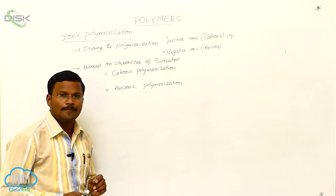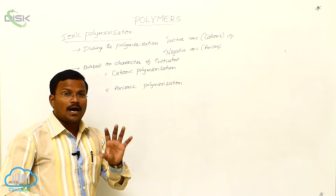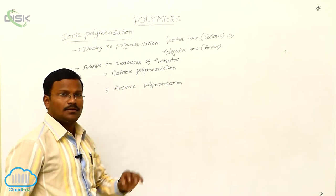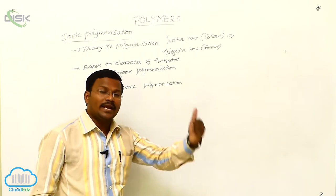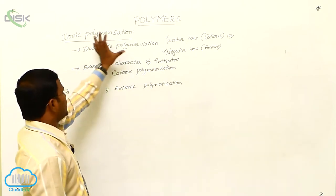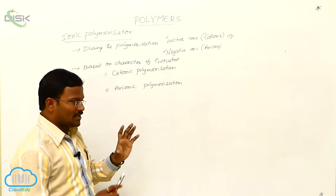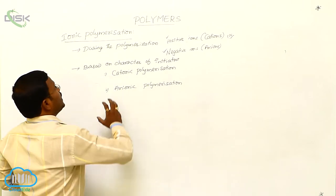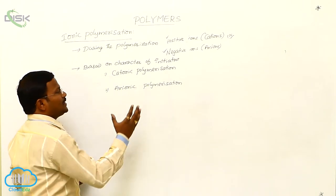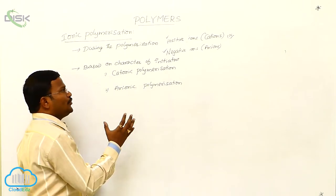Based on this phenomenon, addition polymerization is classified into two types: ionic polymerization and free radical polymerization. Ionic polymerization involves ionic intermediates produced during the polymerization process.